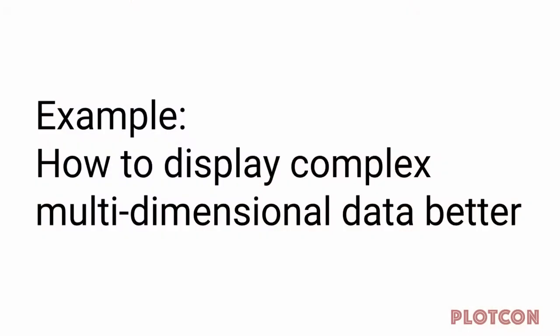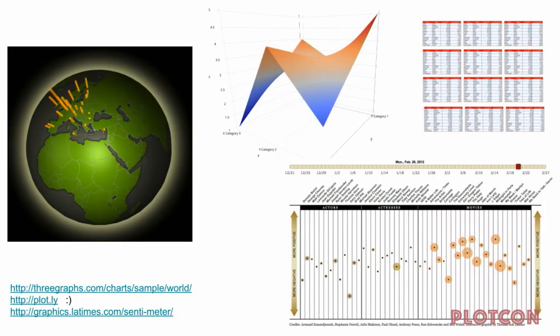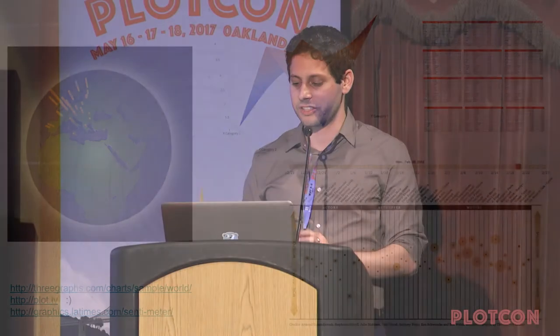Here's a quick example: how to display complex multi-dimensional data better. On the left we have 3graphs.com, which uses Three.js — a 3D map you can rotate projected on your 2D screen. In the top middle, Plotly 3D with a graph that has X, Y, Z, and a heat map. You can also have tables, which is generally not a good idea. In the bottom left, the LA Times created something called the Sentiment-imeter — it shows Twitter sentiment analysis with data letting you go through time and see how sentiment changes.